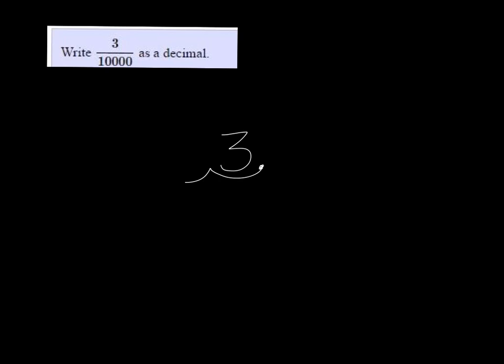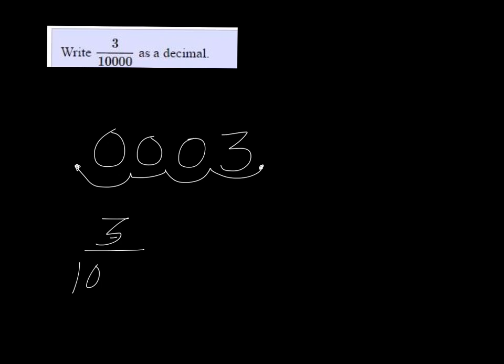10,000 has 4 zeros in it, so I'm going to count 1, 2, 3, 4 to the left, and then put zeros in. So in the end, we get that 3 over 10,000 is equal to .0003.